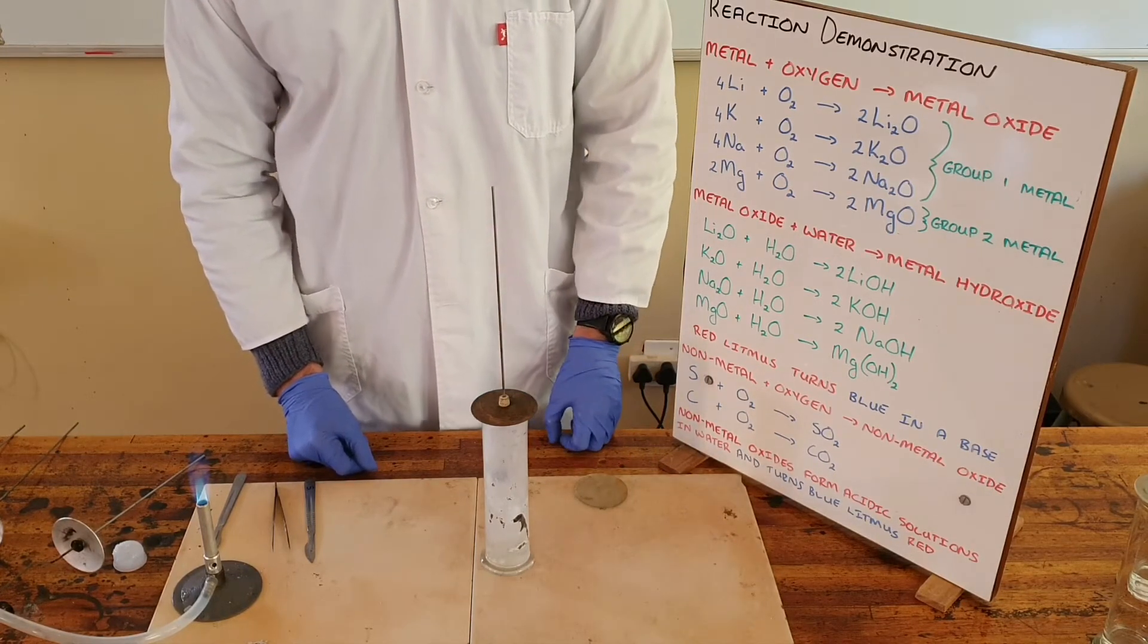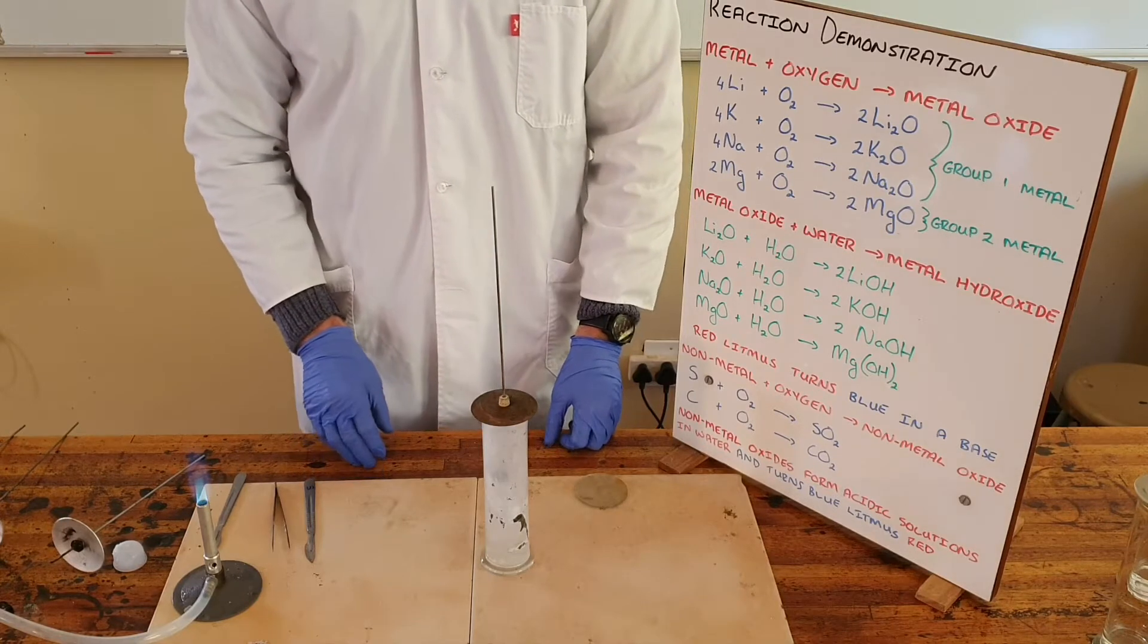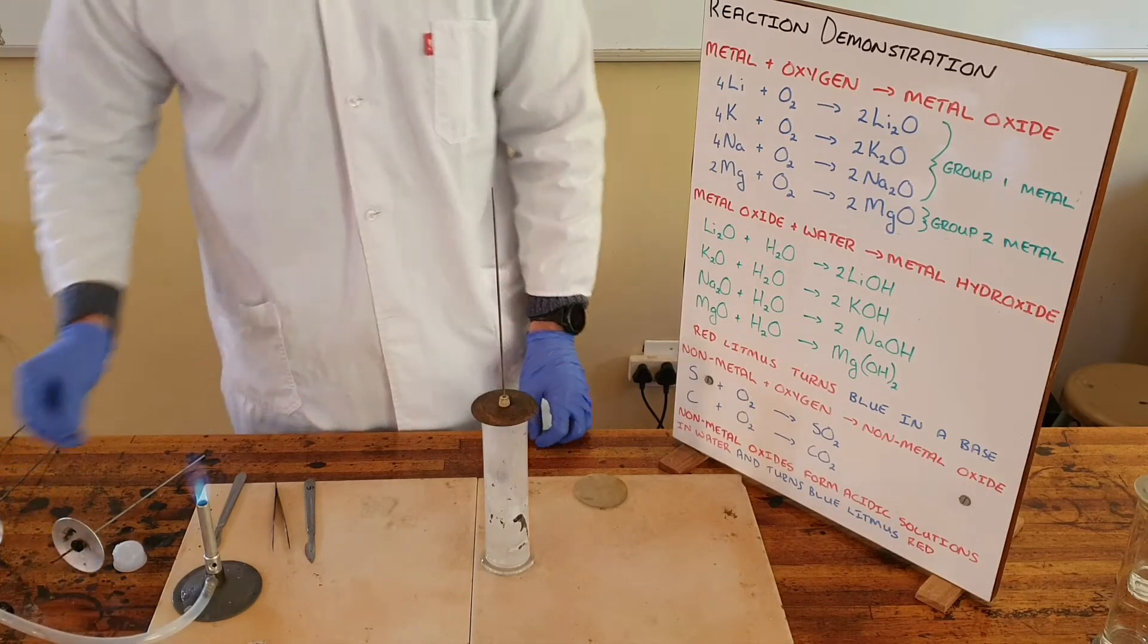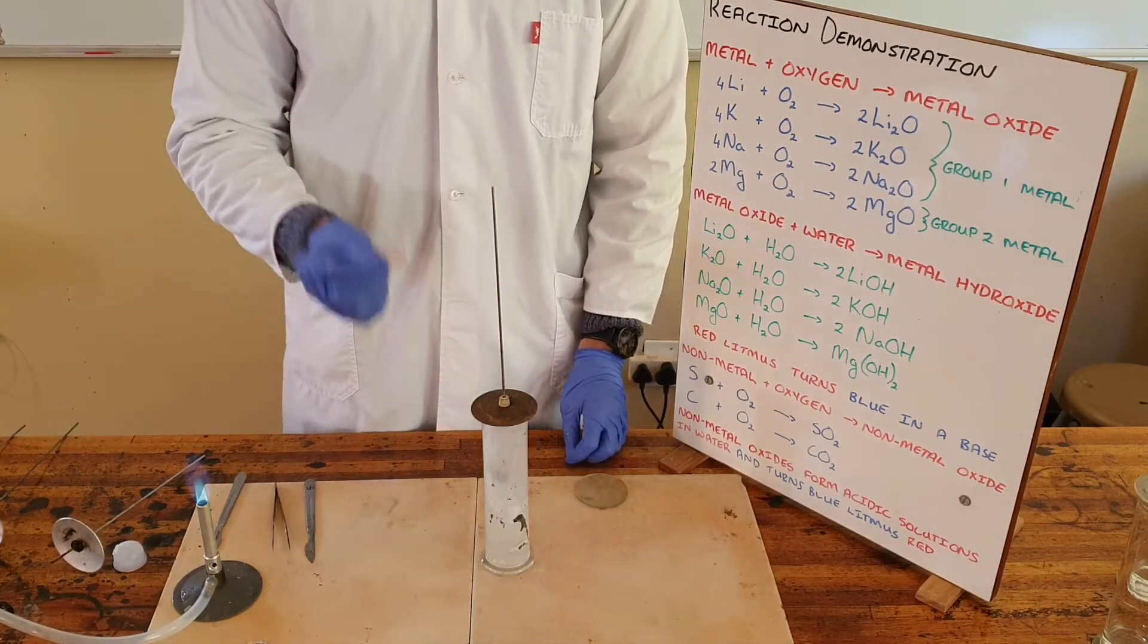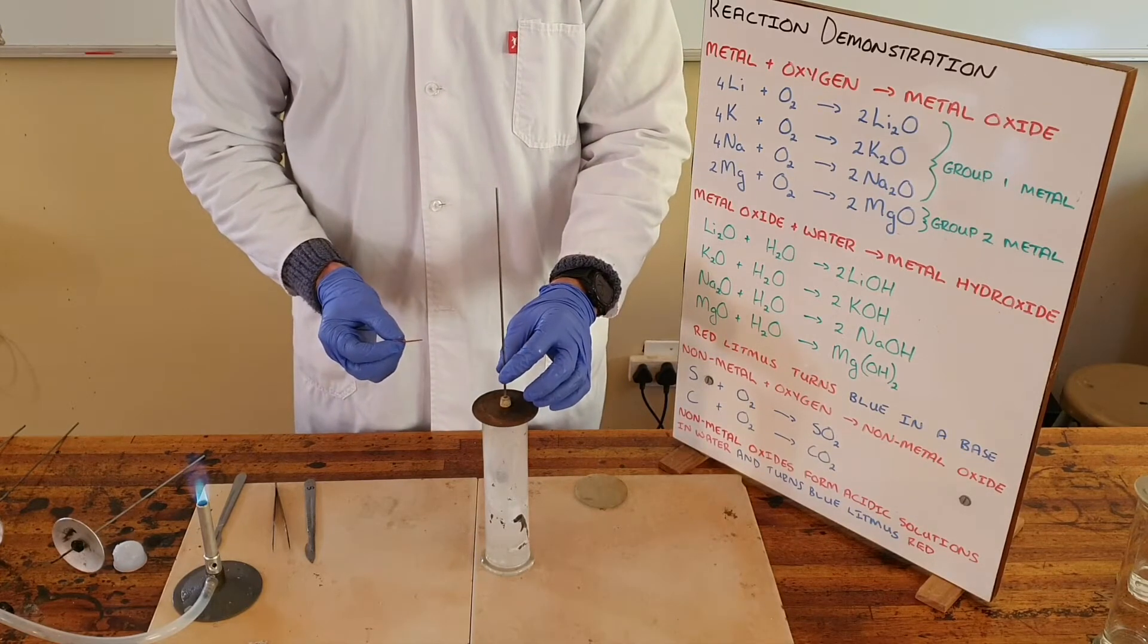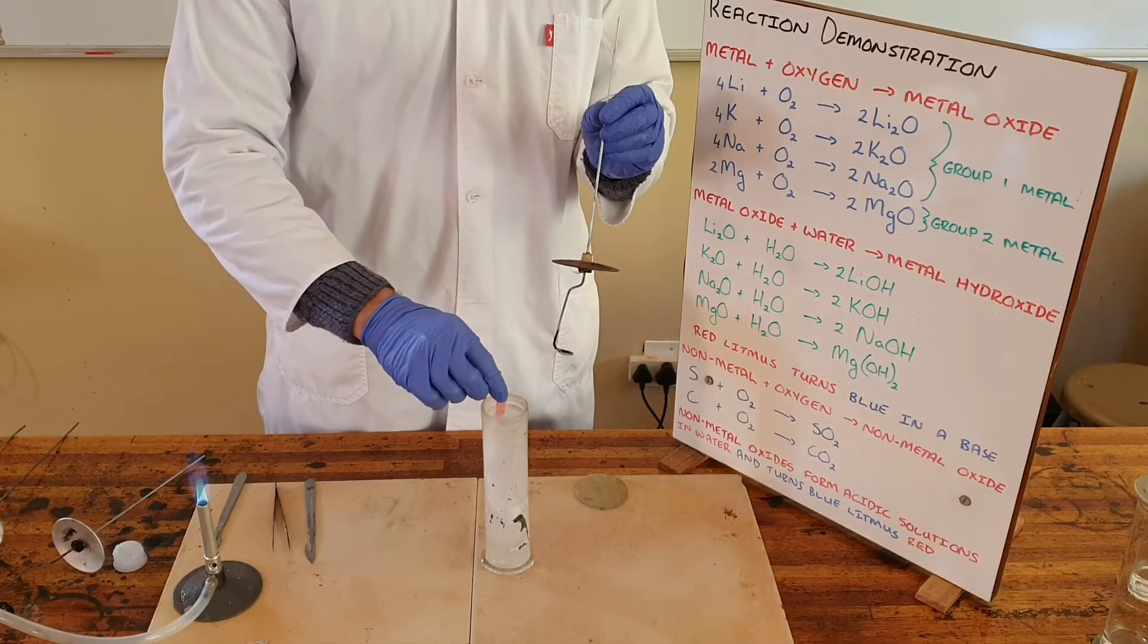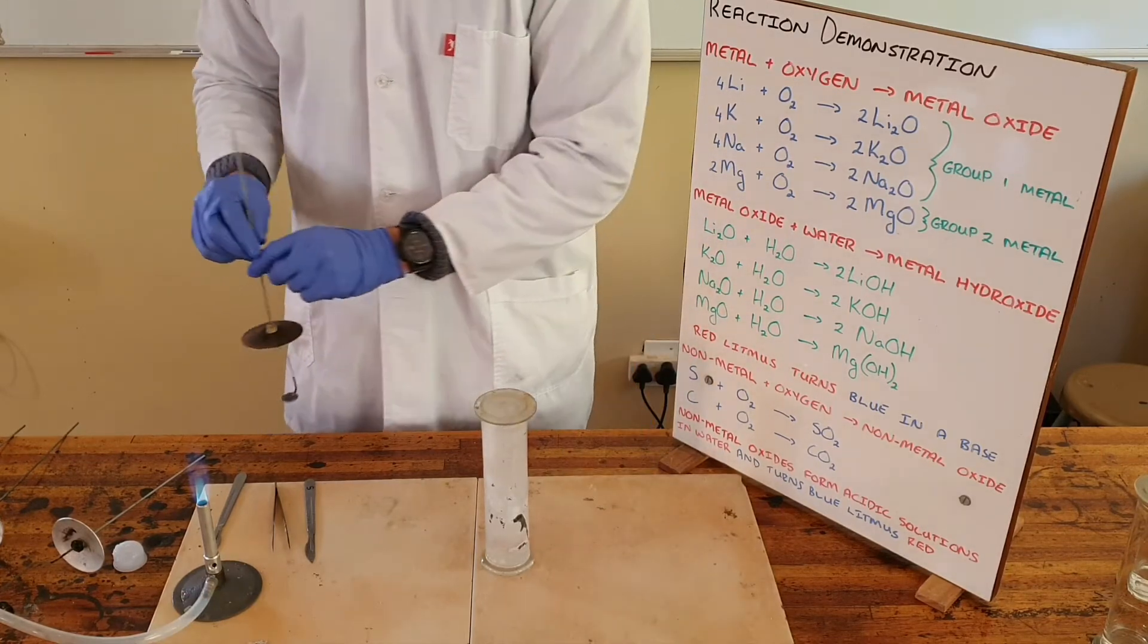We can see the white smoke and white powder forming—that is magnesium oxide. We know that a metal oxide when combined with water forms a basic solution. This can be shown by adding a piece of red litmus paper to that solution. Red litmus paper will turn blue in the presence of a base.